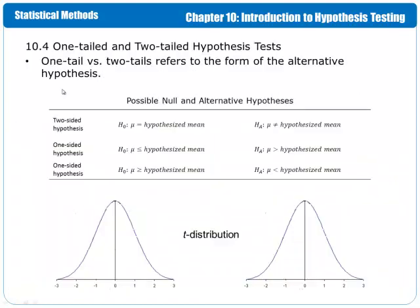So looking at the null and alternative hypotheses, we mentioned that there are two-sided and one-sided hypothesis tests. What that means is for a two-sided test, we are worried about values being too small or being too large, and so we have two cutoffs. Anything below this cutoff is too small and anything above this cutoff is too large. Because of the tails in the distribution, the two-sided hypothesis test is referred to as a two-tailed test.